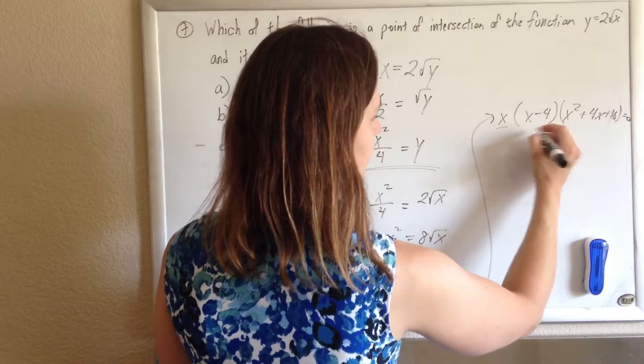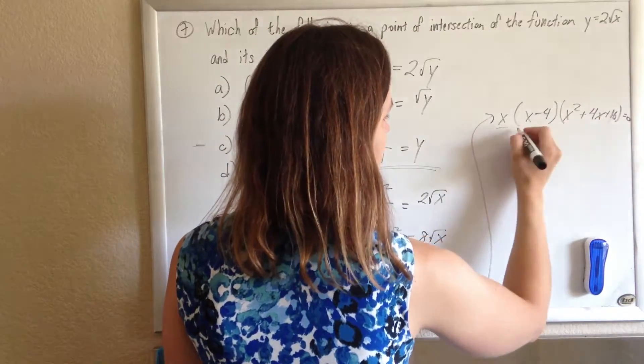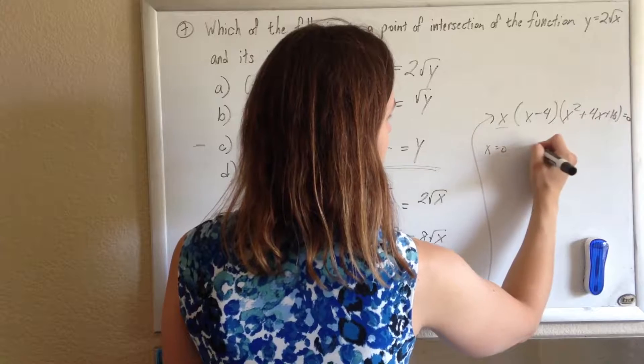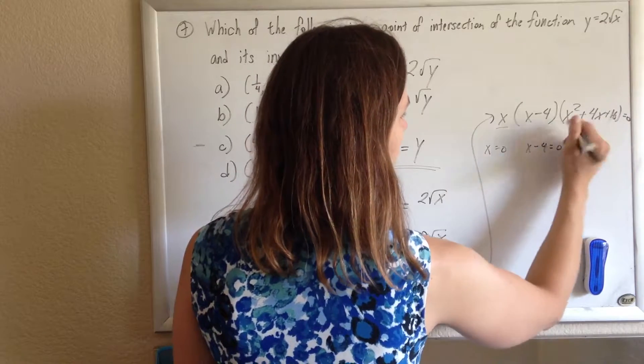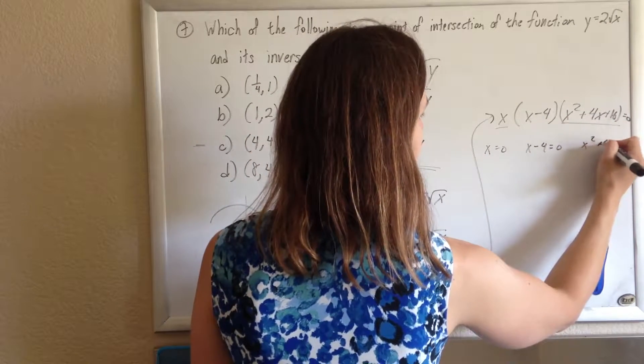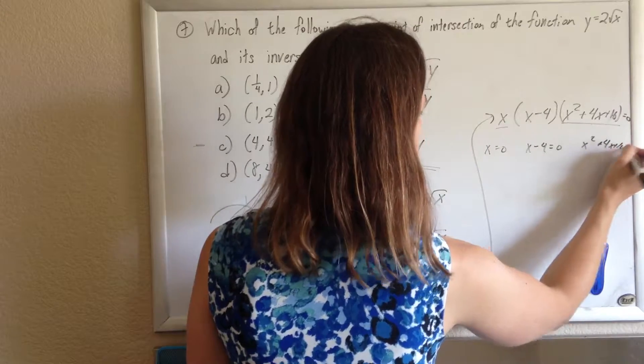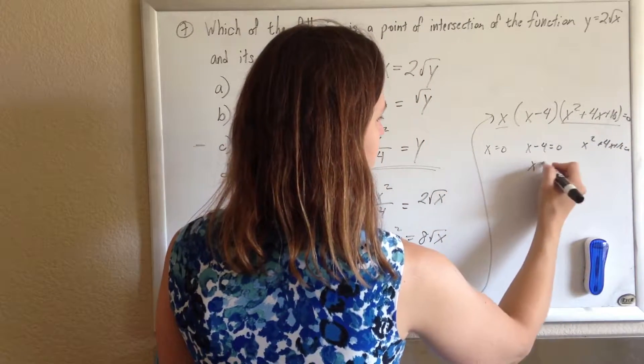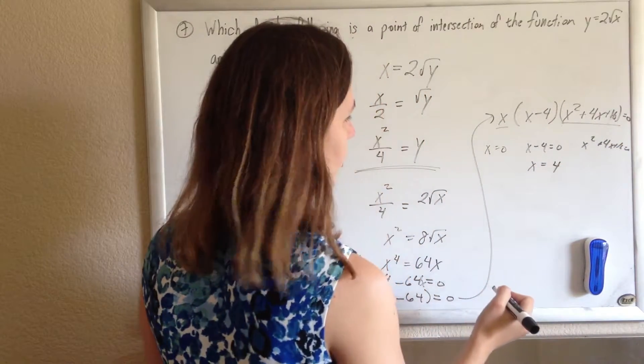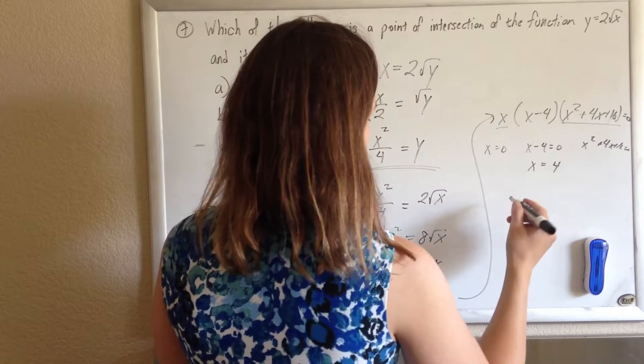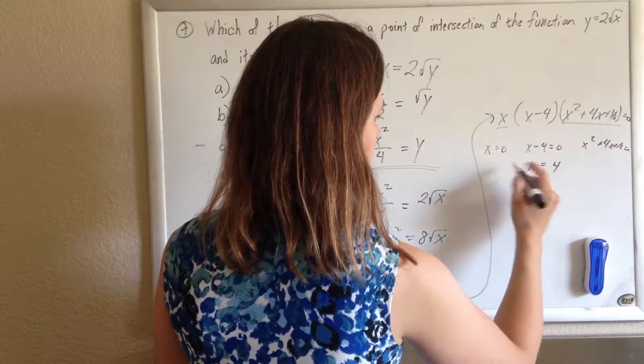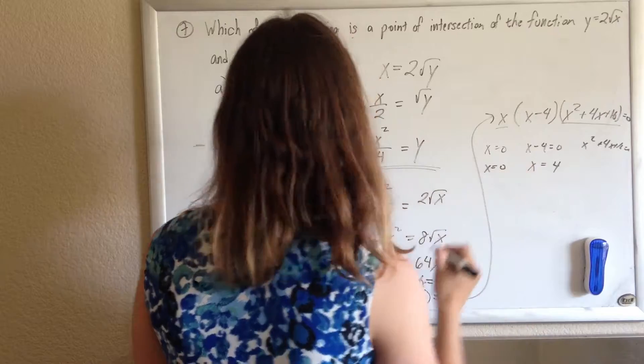So, either this equals 0, this equals 0, or this equals 0. Then, either x equals 0, or x minus 4 equals 0, or this equals 0. So, x could be 4. Or, x could be 0.